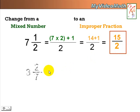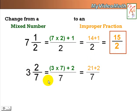Let's do another one: 3 and 2 7ths. 3 times 7 plus 2. Remember that? 23 over 7 is a converted improper fraction.